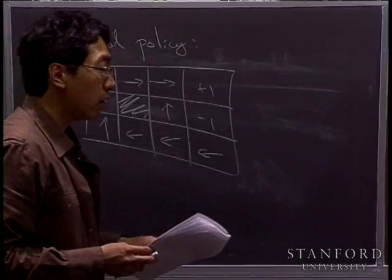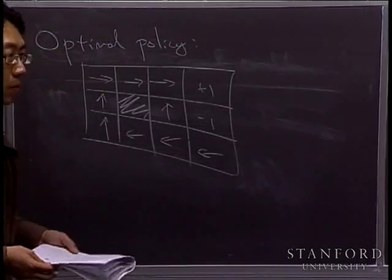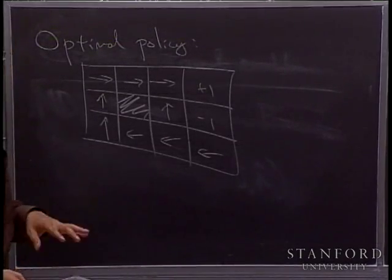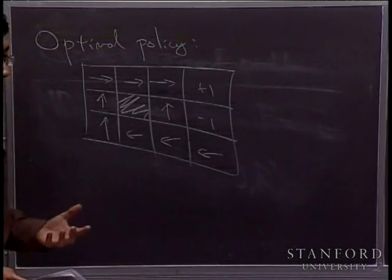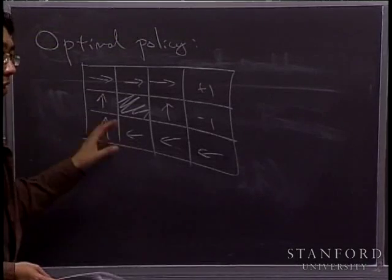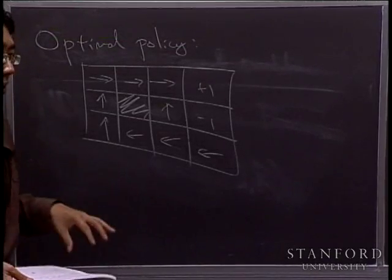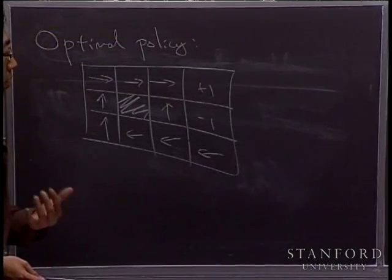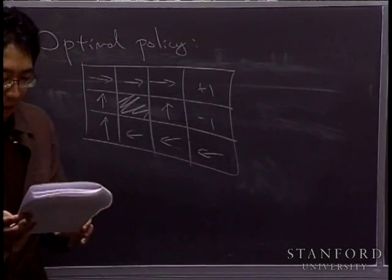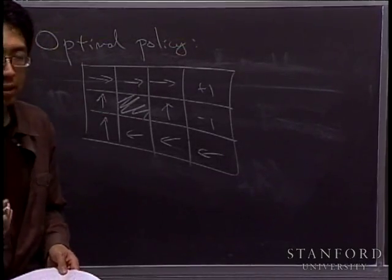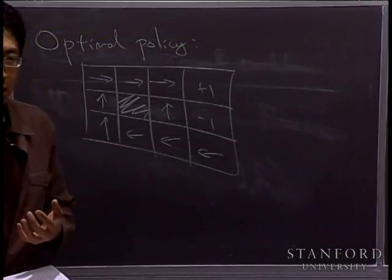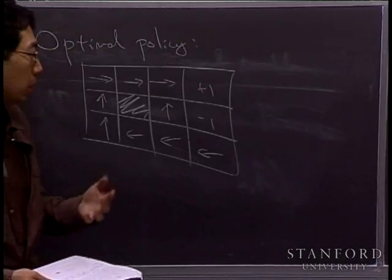Can a policy be a function of not just the current state but previous states as well? The answer is yes — sometimes we call them strategies instead of policies. But for an MDP, it turns out that allowing policies to depend on previous states will not let you do any better. There exists a policy that only ever looks at the current state and will maximize the expected total payoff. So all we need to do is look at the current state and choose an action. When I say 'execute a policy,' I mean taking actions according to that policy — whenever I'm in some state S, I take the action that the policy pi outputs for that state.